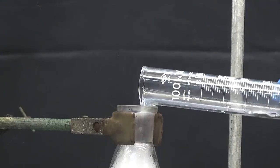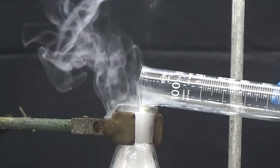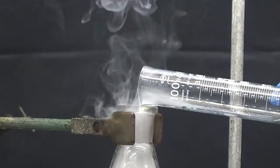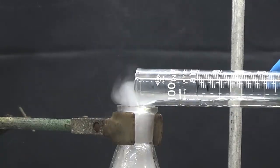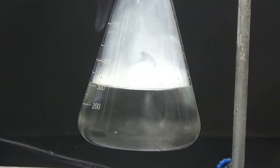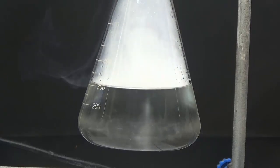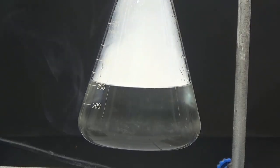To precipitate the semicarbazide hydrochloride, 150 milliliters of concentrated hydrochloric acid is slowly added to the methanol solution. We'll perform this procedure under a fume hood.